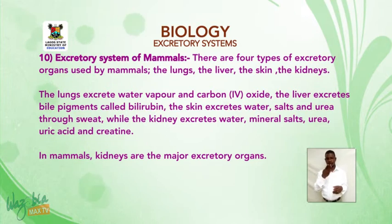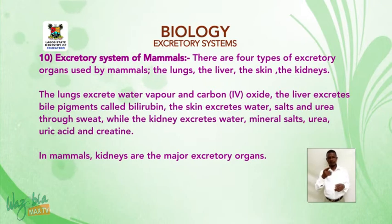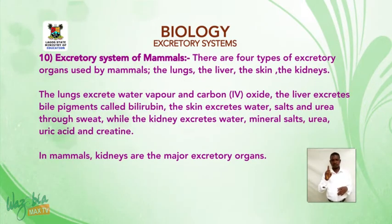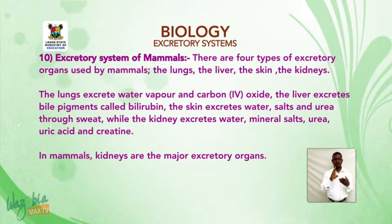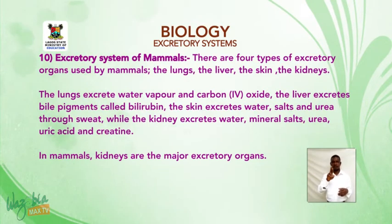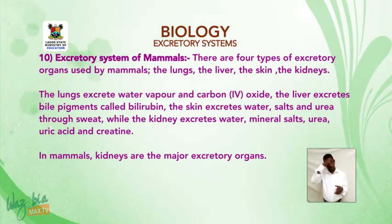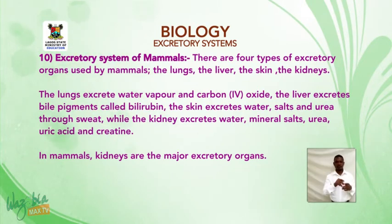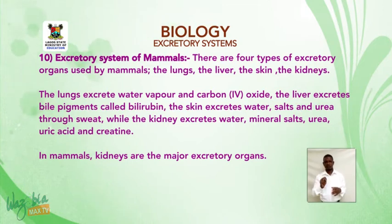Mammals have four types of excretory organs: the lungs, the liver, the skin, and the kidneys. The lungs excrete water vapour and carbon dioxide; the liver excretes bile pigments called bilirubin; the skin excretes water, salt, and urea through sweat; and the kidneys excrete water, mineral salts, urea, uric acid, and creatinine.